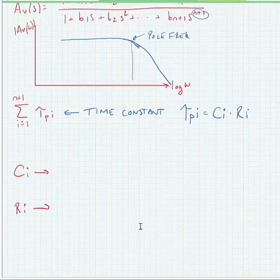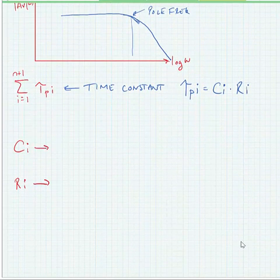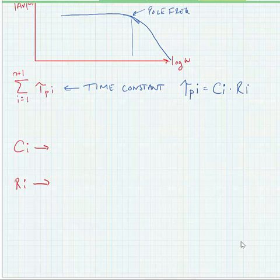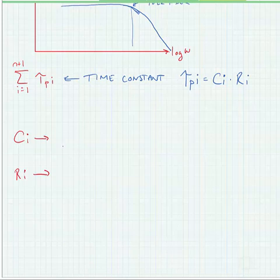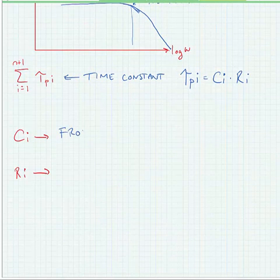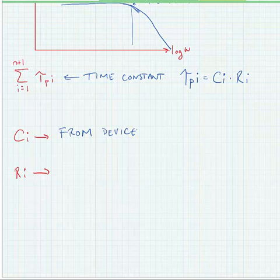In our case, these high frequency poles are going to be caused by small capacitances. These capacitances are going to arise from the device. If we look at what we've looked at so far from our device physics review, we've seen that these are things like C mu and C pi for bipolar transistors.